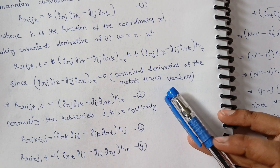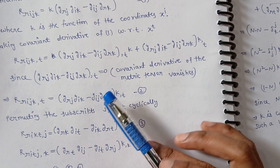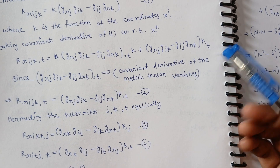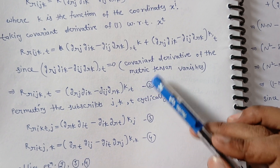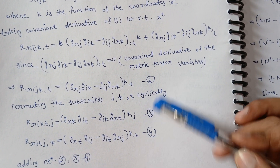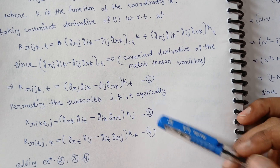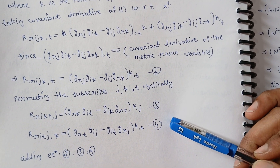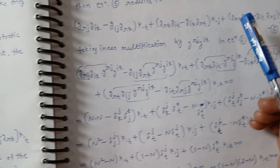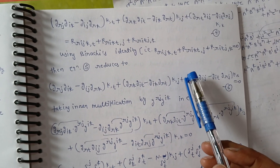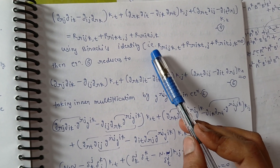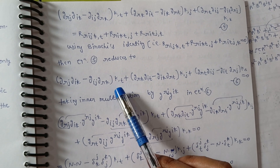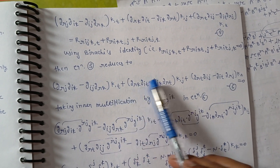We permute the subscripts j, k, t cyclically to obtain three equations — this process we have done many times so it is not difficult. We add two of these equations together, and using the Bianchi identity this part becomes 0. The resulting equation, which we call equation 5, is then written in this simplified form.